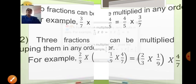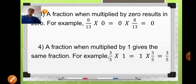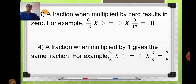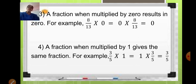Your third property is: a fraction when multiplied by 0 results in 0. That is, any fraction if it is multiplied by 0, your answer will always be 0. Your fourth property tells you that a fraction when multiplied by 1 gives you the same fraction. For example, 3 upon 5 multiplied by 1 or 1 multiplied by 3 upon 5, your answer will be the same fraction — that is 3 upon 5.